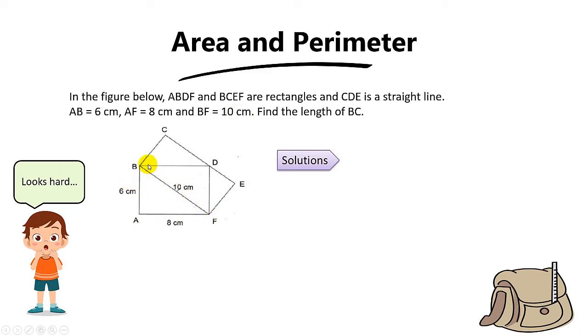And we want to find the length of BC. So based on this information, how are we supposed to find this length over here? The key lies in finding the area of this triangle first.